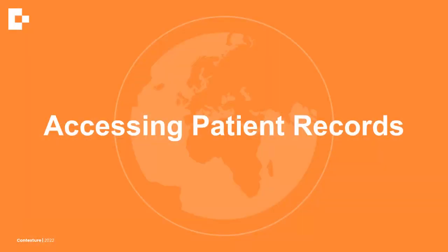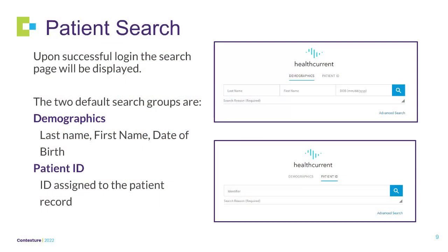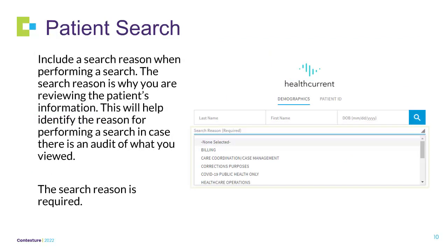In this section, we will cover accessing patient records. Upon successful login, the search page will display. The two default search groups are demographics — which includes last name, first name, and date of birth — or patient ID, which is the ID assigned to the patient record. Include a search reason when performing a search. The search reason is why you are reviewing the patient's information and will help identify the reason in case there is an audit. A search reason is required.